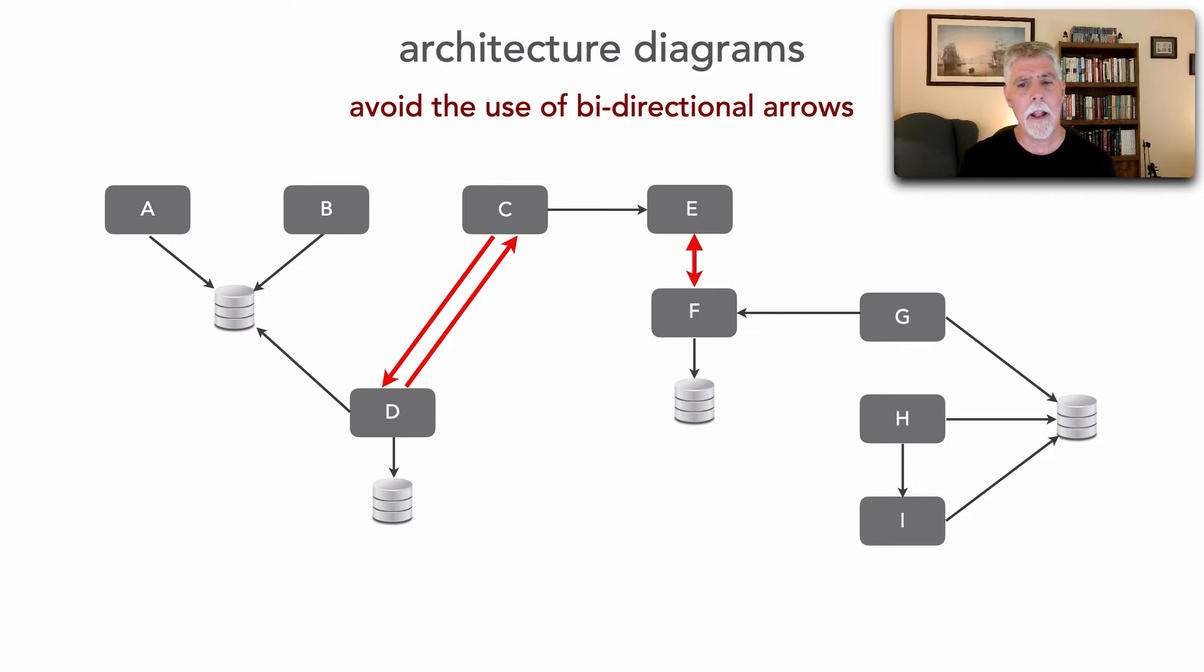Now I asked and analyzed about E to F because I saw a bidirectional arrow there and I said is this the same? It's like no, no, no. E is making a request for data from F and F is returning that data.